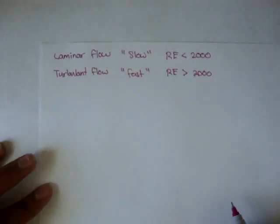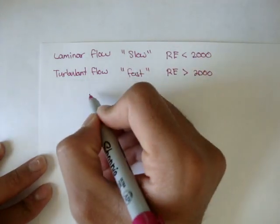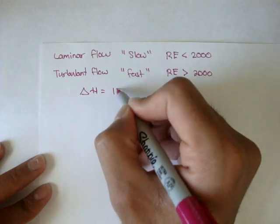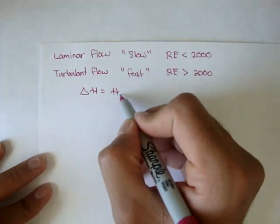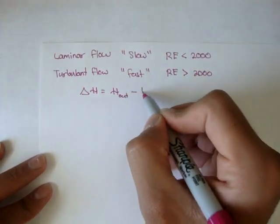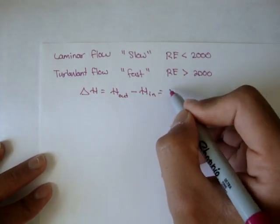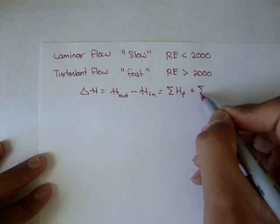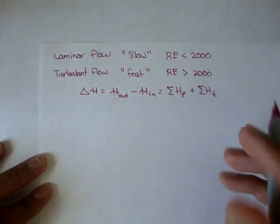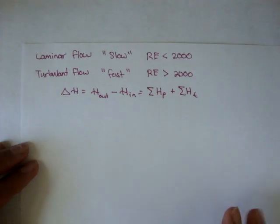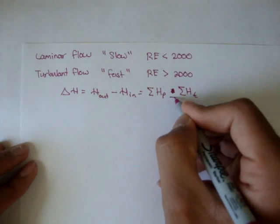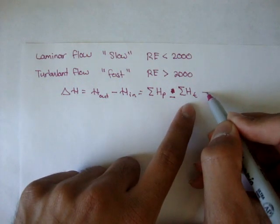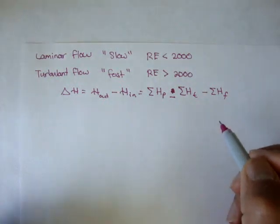So let's rewrite our total energy head equation. It's the total energy head coming out of the system minus the total energy head coming in, and that's equal to the summation of all the pump heads minus all the turbine heads and then minus all the frictional head losses.